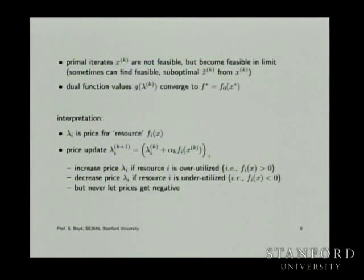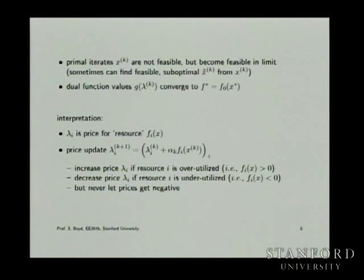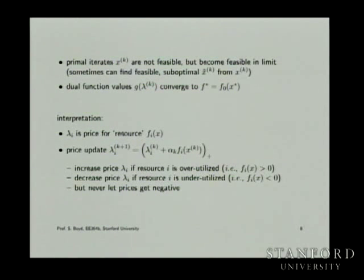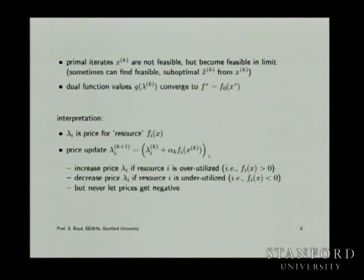In this method, the primal iterates are not feasible. If you ever hit an iteration where the primal iterates are feasible, you are now primal-dual optimal — quit. In a projected subgradient method applied to the primal, after each step you're feasible because you project onto the feasible set. That's a feasible method.